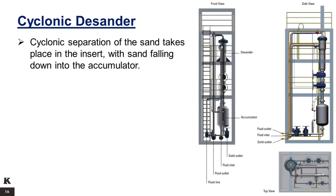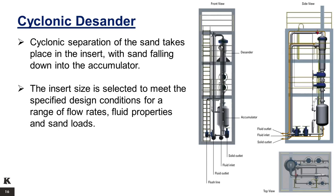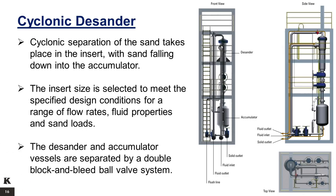Cyclonic separation of the sand takes place in the insert, with sand falling down into the accumulator. The insert size is selected to meet specified design conditions for a range of flow rates, fluid properties, and sand loads. The desander and accumulator vessels are separated by a double block and bleed ball valve system, and the accumulator is also drained through a similar arrangement. The entire well stream is fed into the desander vessel where it is directed into the insert. The maximum sand concentration for continuous operation is about 10 pounds of solids per minute, based on a 50% solid slurry with a solid specific gravity of 2.7.